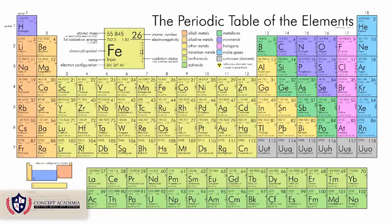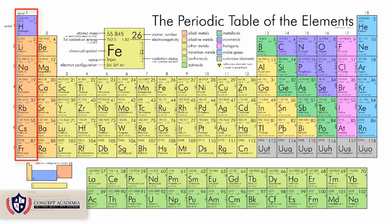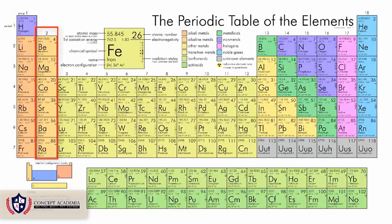To get a basic understanding of the periodic table: the table is divided into columns and rows. This vertical column is the group, and it tells us the number of electrons in the last shell. All these elements belong to group one, so they all have one electron in the last shell. This is group two, so all these elements have two electrons in their last shell.